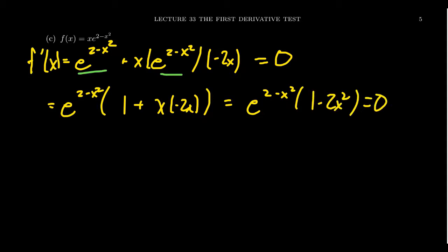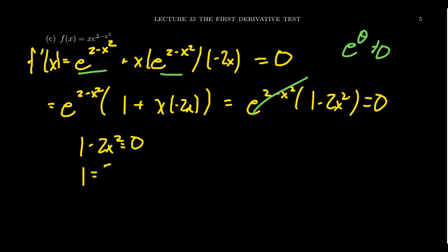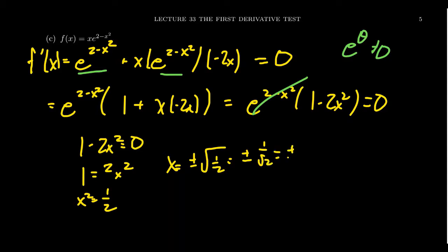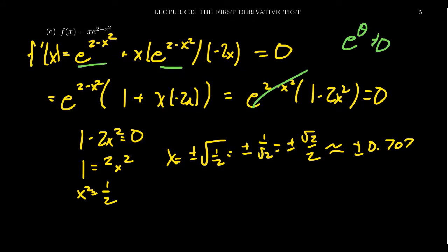Exponential functions e^(anything) can never equal zero — they are always positive. So it must be the case that 1 - 2x² = 0. Adding 2x² to both sides gives 1 = 2x², then dividing by 2 gives x² = 1/2. Therefore our critical numbers are x = ±√(1/2), which can also be written as ±1/√2 or ±√2/2, approximately ±0.707. We build our sign chart based on these two critical numbers.